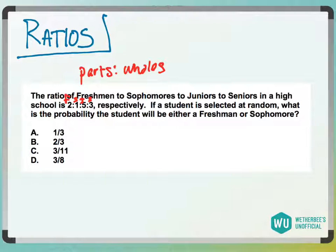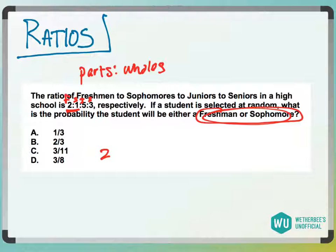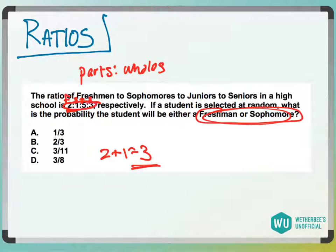What is the probability that a student will be either a freshman or a sophomore? The freshman and sophomore parts are 2 and 1, so 2 plus 1 equals 3. Then for the total on the bottom, I add all of them up: 2 plus 1 plus 5 plus 3, which is 8 and 11. So the probability of being either a freshman or a sophomore is 3 to 11.